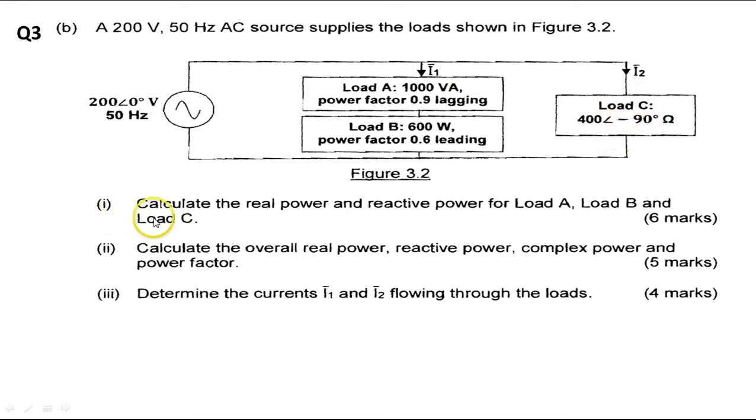Now what we are required to do is to calculate the real power and the reactive power for load A, load B, and load C. And then we are supposed to calculate the overall real power, the combined reactive power, and the complex power, as well as the overall power factor. We then finally determine the currents flowing through I1 and I2 through these two loads.